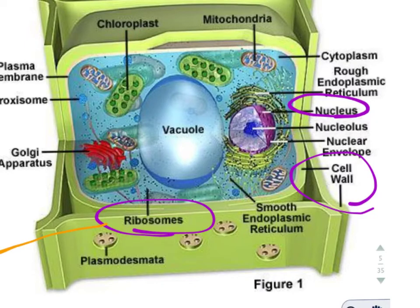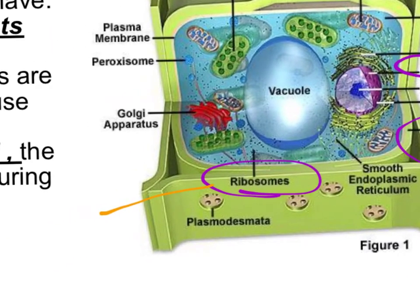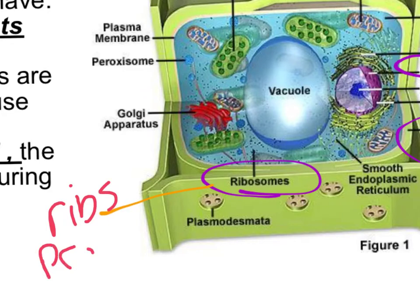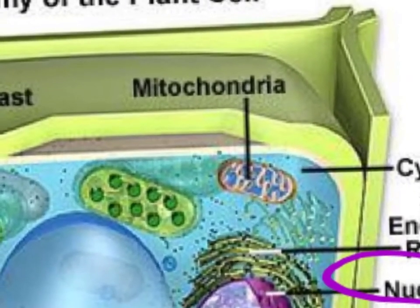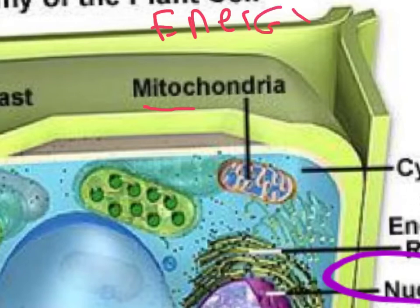They have ribosomes — if you remember ribosomes, think ribs. If you eat a lot of ribs, you're going to get a lot of protein. They also have mitochondria, just like animal cells do. Think 'mighty' — if you're mighty, you are strong, so mitochondria gives you your energy. What's interesting about plants is they're autotrophic: they get energy from the sun with their chloroplasts, but they also use the mitochondria to break it down.